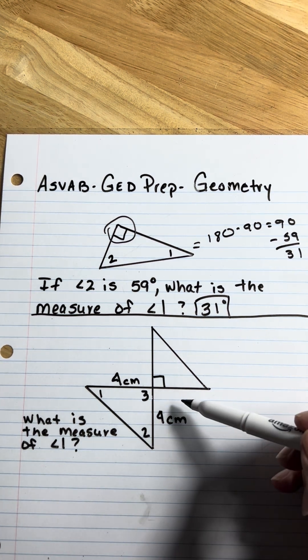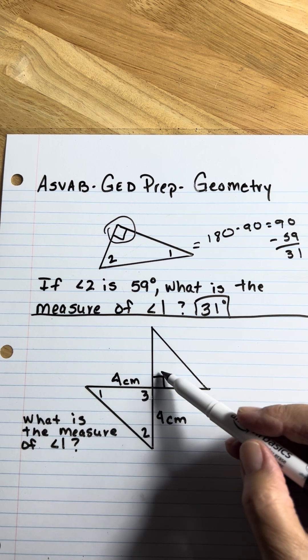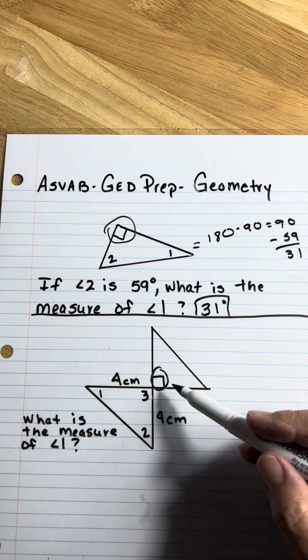In this figure here, it says what is the measure of angle 1? We see this figure again, that means it's a right triangle. This is 90.